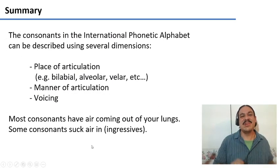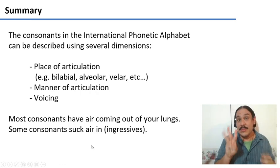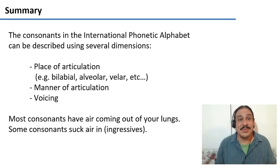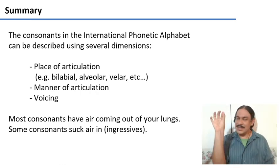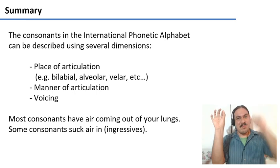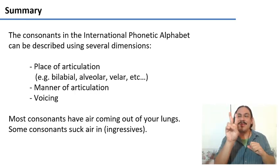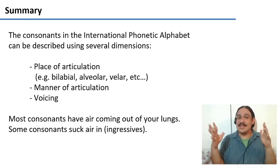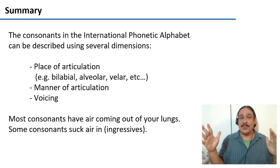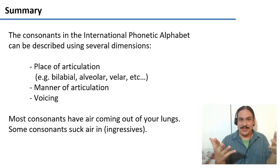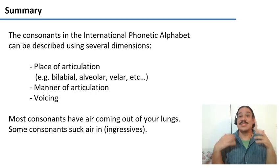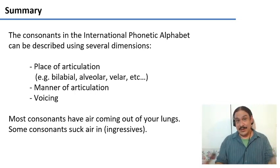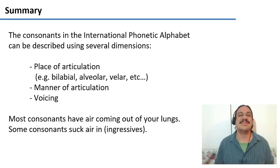In summary, we use three dimensions to describe consonants: place of articulation, manner of articulation, and voicing — whether your vocal cords are vibrating or not. All of the consonants we looked at before have air coming out of your mouth. There are some consonants, like the ingressives, where air goes into your mouth.